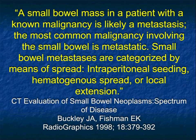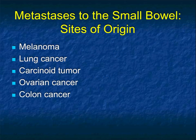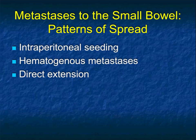A small bowel mass in a patient with a known malignancy is likely a MET. The most common malignancy involving the small bowel is metastatic. Small bowel METs are characterized by means of spread: intraperitoneal seeding, hematogenous spread, or local extension. METs to the small bowel — melanoma is seemingly number one these days, but also lung cancer, carcinoid, ovary, and colon. When you think about direct extension, you have to mention pancreatic cancer.